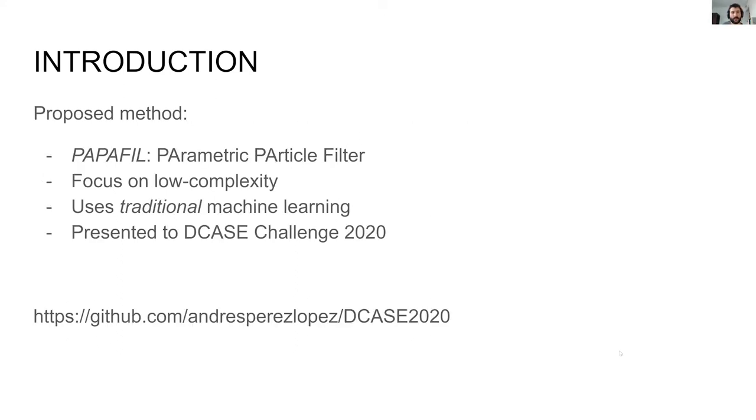The presented work continues the exploration of parametric based localization and detection methods focusing on a low complexity architecture that makes use of traditional machine learning and feature based approaches. The proposed method receives the name of PapaFil which stands for parametric particle filter. This system has been presented to the DCASE challenge 2020 and the open source implementation can be found at the provided link.